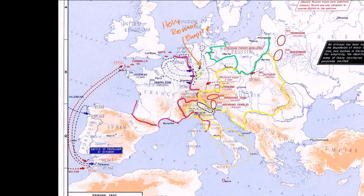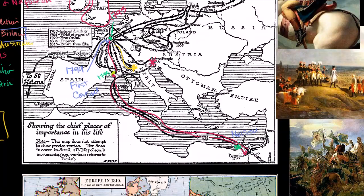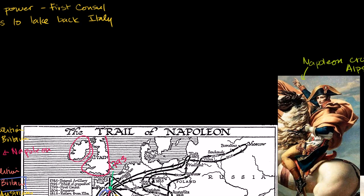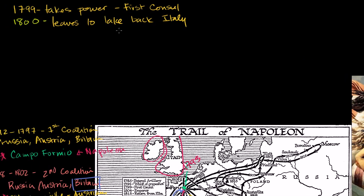Germany at this point — that confederation of kingdoms — was referred to as the Holy Roman Empire, where the King of Austria held the title of Holy Roman Emperor, but he didn't control it in a very centralized fashion. It was actually controlled by a bunch of smaller kings. Napoleon crosses the Alps, defeats Austria — that is essentially the end of the Second Coalition. In 1801 you had the Treaty of Lunaville, ending the Second Coalition.